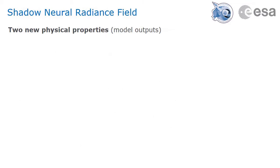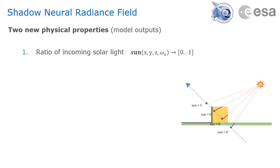Shadow NeRFs are an extension of NeRFs in which we've introduced two new physical properties. In practice, these are just two more outputs to the neural network. The first output represents the amount of incoming solar light at each point in space, in other words, the visibility between the target point and the sun. The value depends on the solar direction omega s.